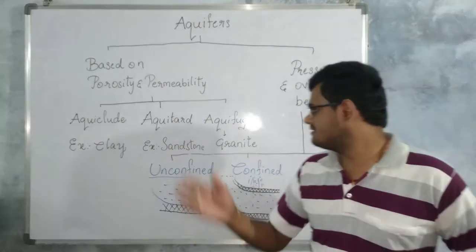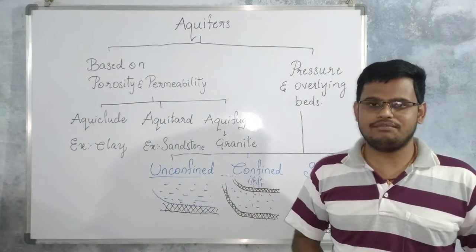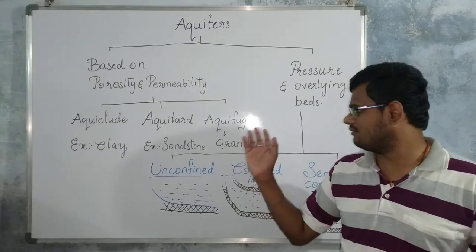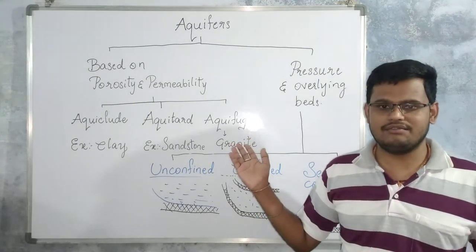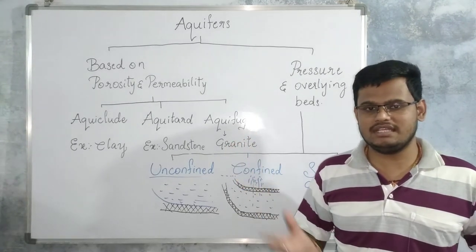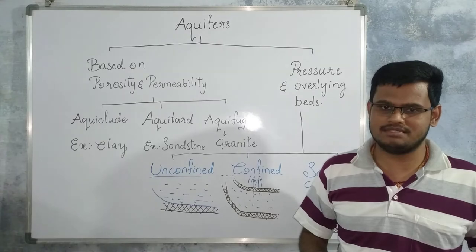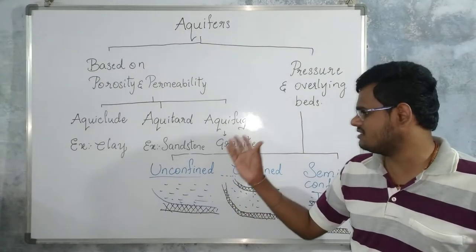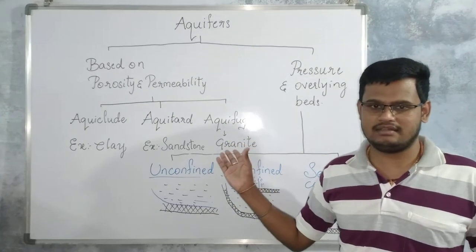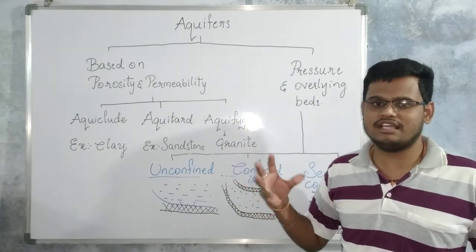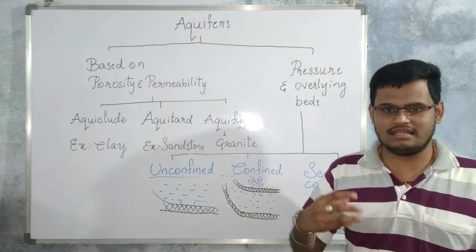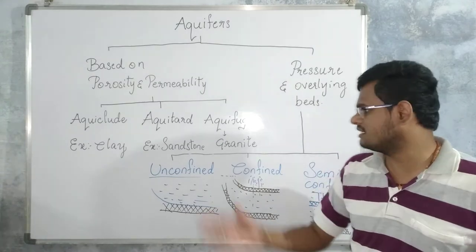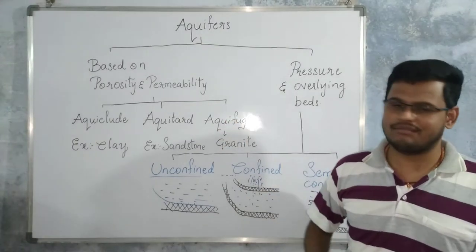Next is aquifuse. Aquifuse is a type of aquifer in which both the porosity and permeability are absent. The best example for aquifuse is granite — that means all compact rocks which don't have pore spaces and permeability come under aquifuse.